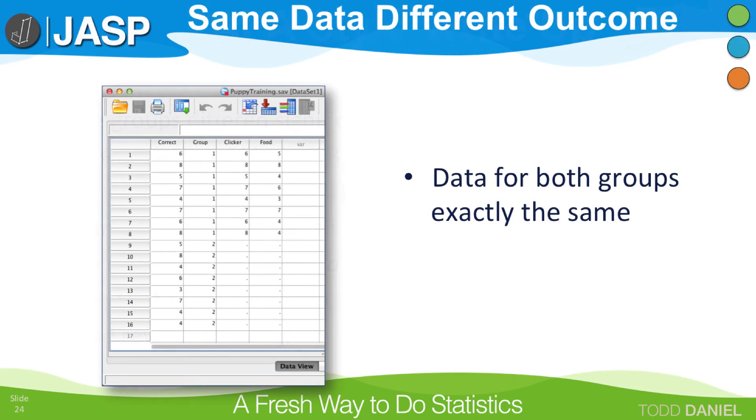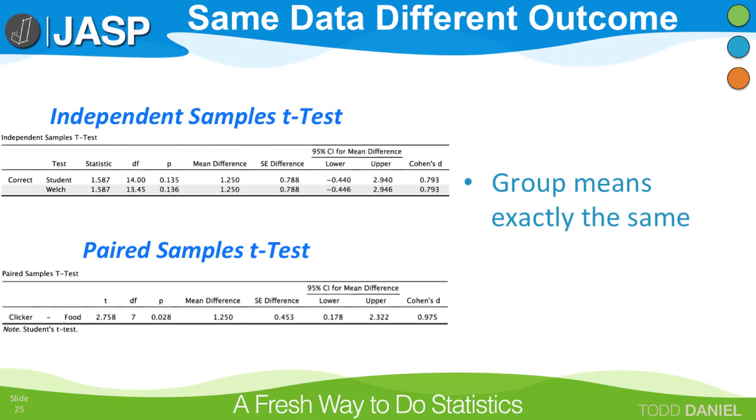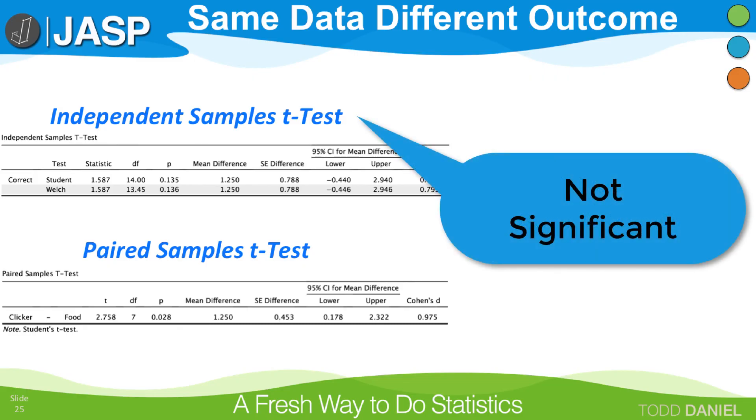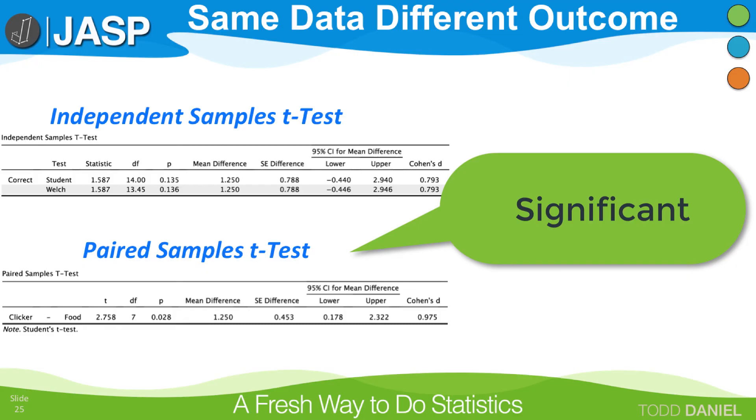And finally, look at the data for these two tests. You will notice something remarkable. The data are exactly the same. The group means are exactly the same in both tests, and yet the independent samples t-test was not significant, but the paired samples t-test with exactly the same numbers was significant.